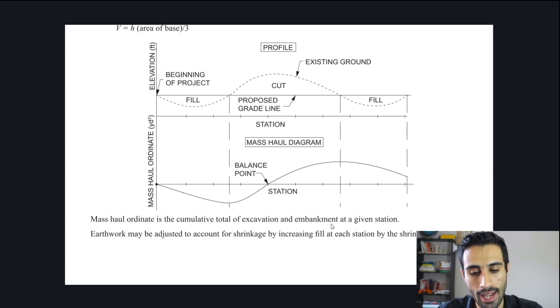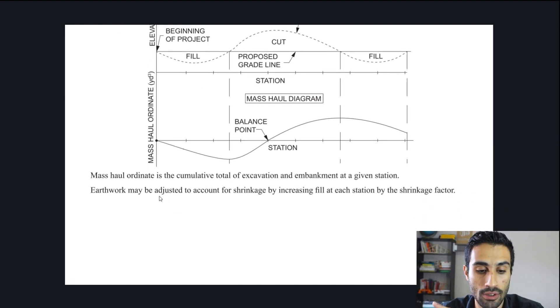We take the cut and the fill, we combine them together. Then we get a net volume. It's a net volume for the mass haul value, the value we get in that mass haul diagram. Make sure you know that. Also they talk about the word shrinkage. So now they expect us to know how to incorporate the shrinkage factor or the shrinkage percentage